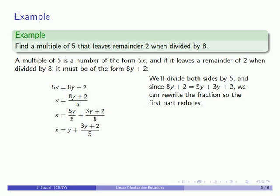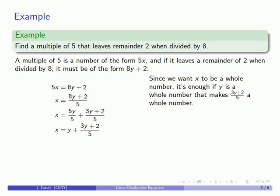Because we want x to be a whole number, we've reduced the problem to the following: find a whole number y that makes the fraction (3y + 2) / 5 equal to a whole number. If y is a whole number and 3y + 2 is a whole number, then x is also going to be a whole number.